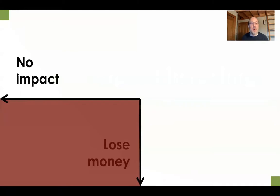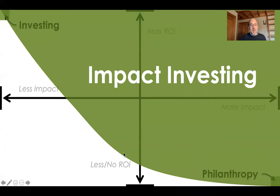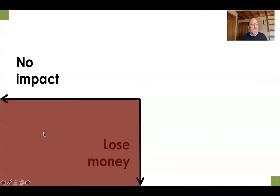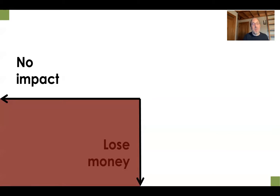The bottom-left corner was skipped because that corner means purposely going to lose money and having no impact. It's really uncommon — it should never happen — that someone purposely goes to lose money and doesn't want an impact at the same time. A lot of impact investments, after the fact, we discover that they're in fact down in the bottom-left corner, but we didn't intend them to be there. So that's in red — we don't really want to go there.